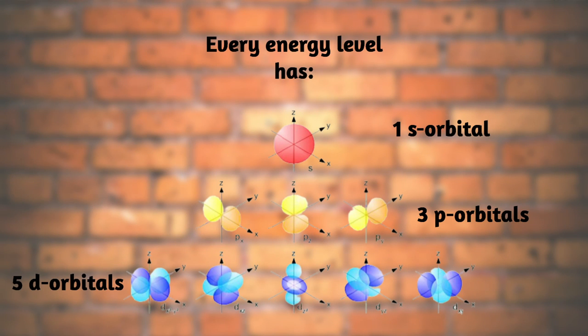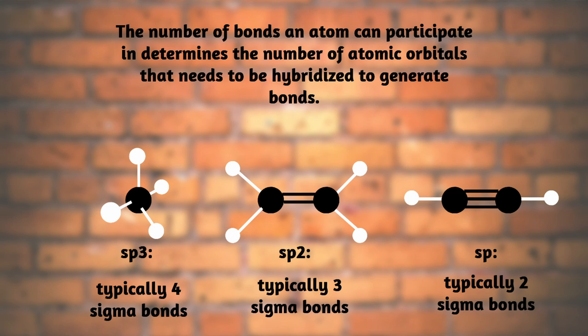Now every energy level has 1 s orbital, 3 p orbitals, and 5 d orbitals. And I'm not going to talk about the f orbital. The number of bonds an atom can participate in determines the number of atomic orbitals that needs to be hybridized to make hybrid atomic orbitals to generate bonds.